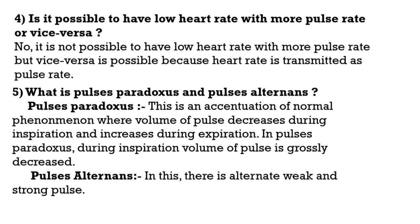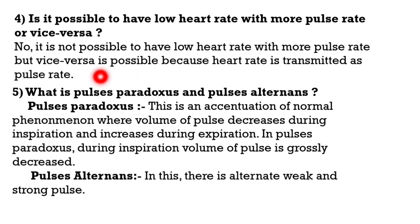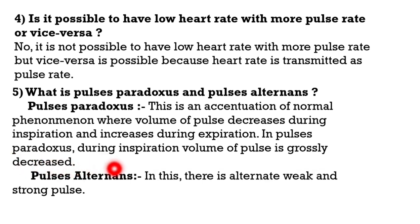Question number 4: Is it possible to have a low heart rate with a higher pulse rate, or vice versa? It is not possible to have a low heart rate with a higher pulse rate. But the opposite — vice versa — is possible, because heart rate is transmitted as pulse rate. Question number 5: What is pulsus paradoxus and pulsus alternans? Pulsus paradoxus is an accentuation of the normal phenomenon where the volume of the pulse decreases during inspiration and increases during expiration. In pulsus paradoxus, during inspiration, the volume of the pulse is grossly decreased. In pulsus alternans, there is an alternating weak and strong pulse.